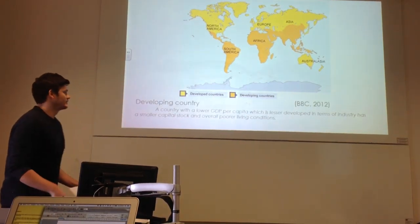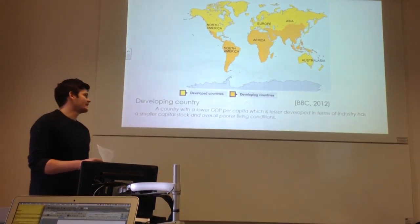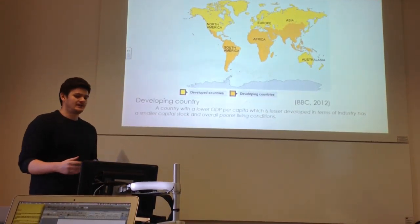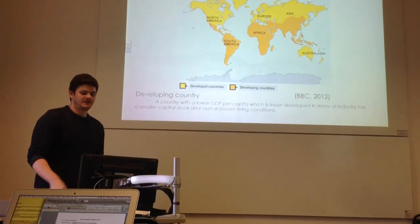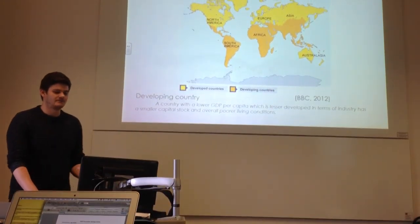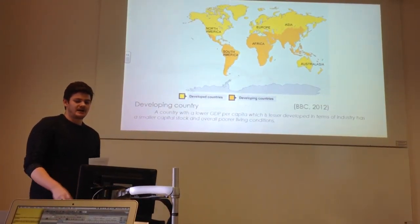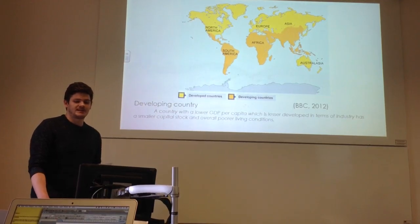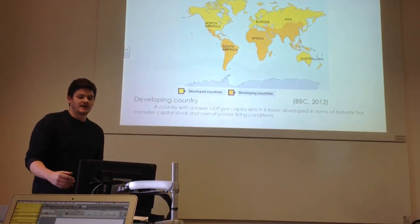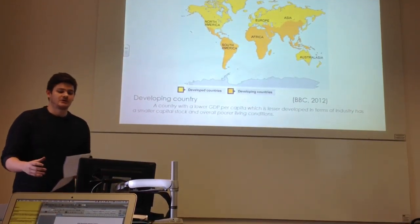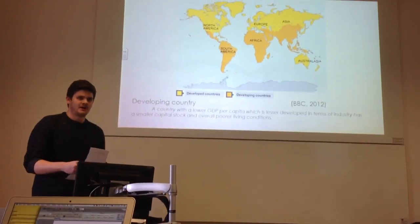Here's a basic map showing a straightforward divide of developed and developing countries, with a definition of a developing country as a country with a lower GDP per capita, which is less developed in terms of industry, has a smaller capital stock, and poorer living conditions.